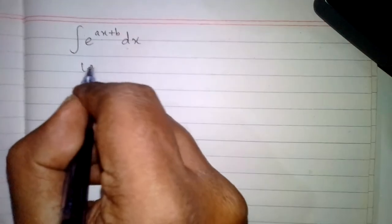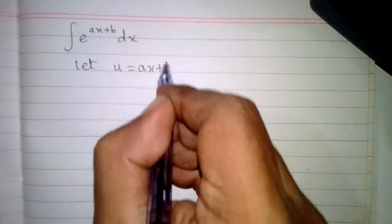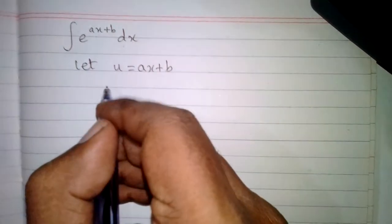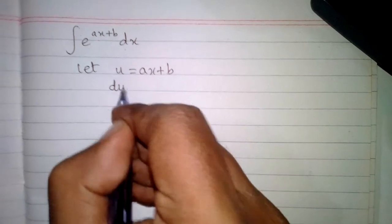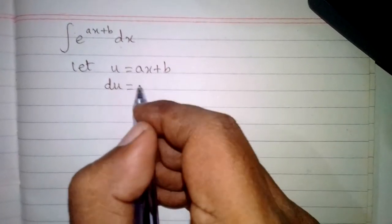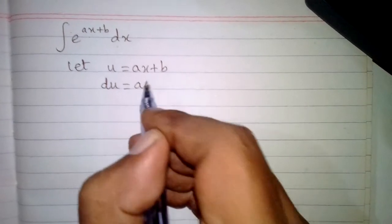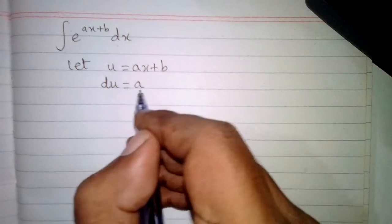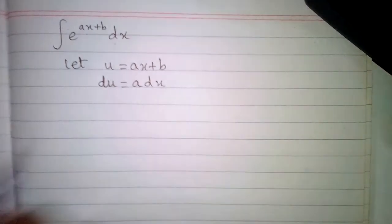In this video we will find the integral of e to the power ax plus b. We can let u equal to ax plus b. Now we take the differential du, which is equal to the derivative of ax plus b. The derivative of ax is a and the derivative of b is 0, so the differential du is equal to a times dx.